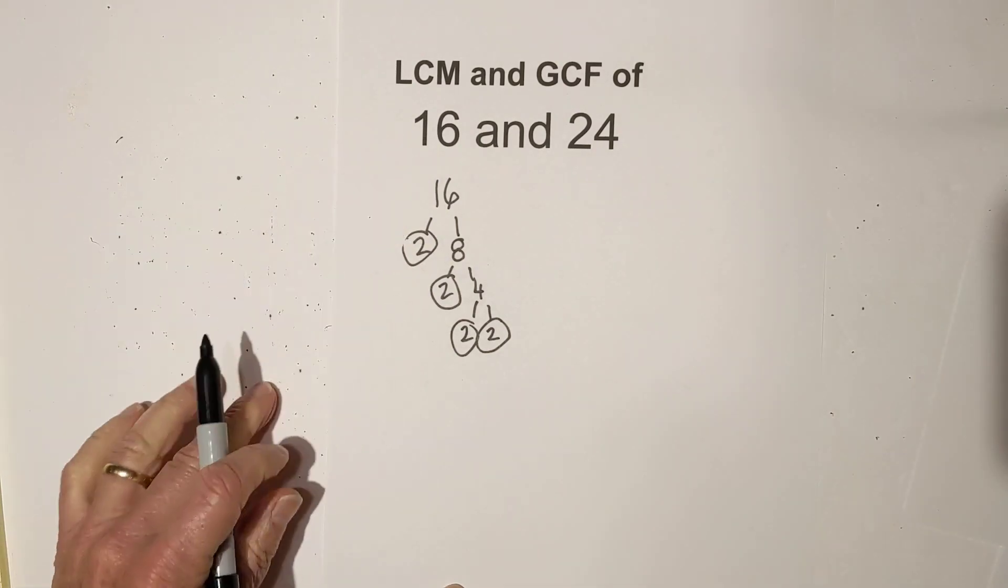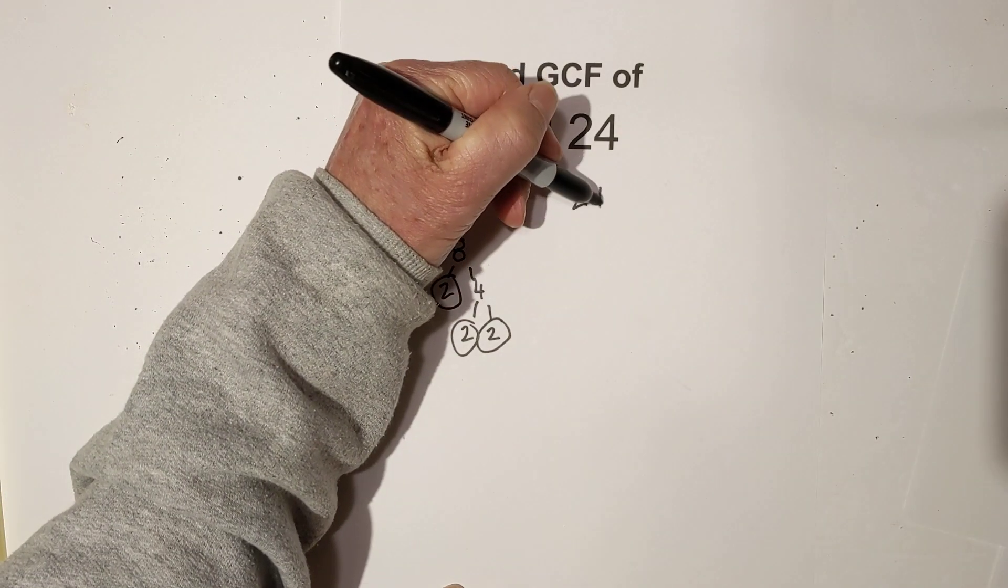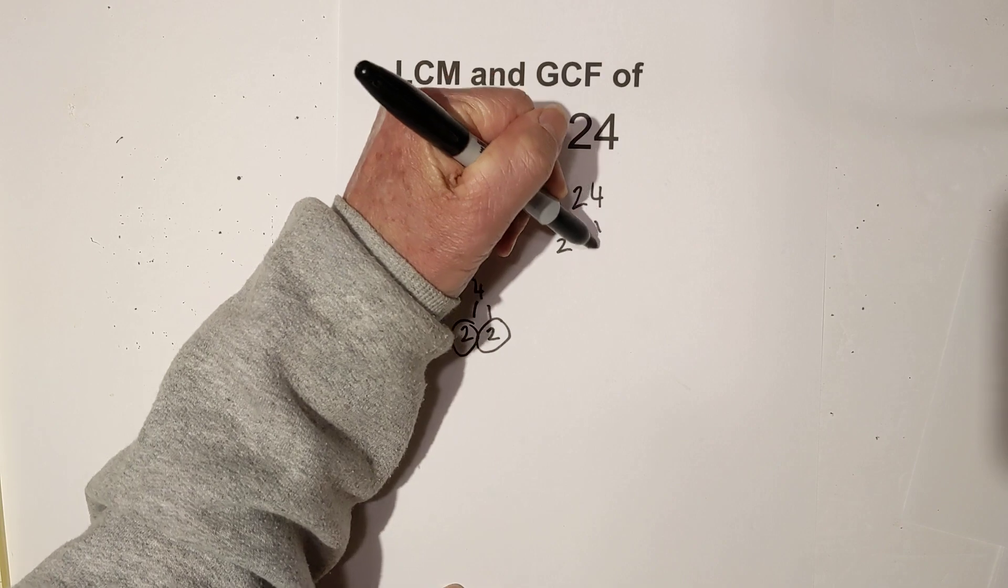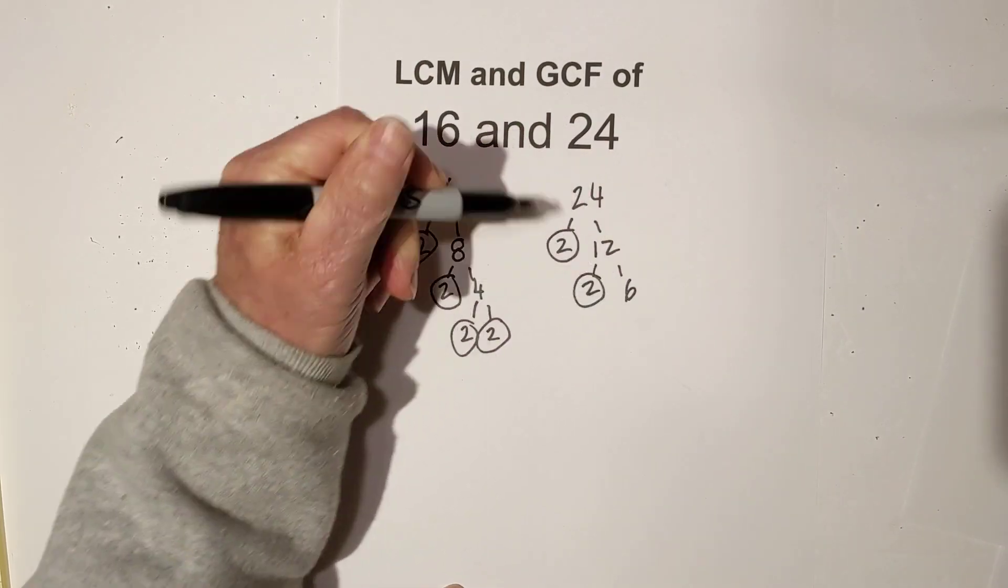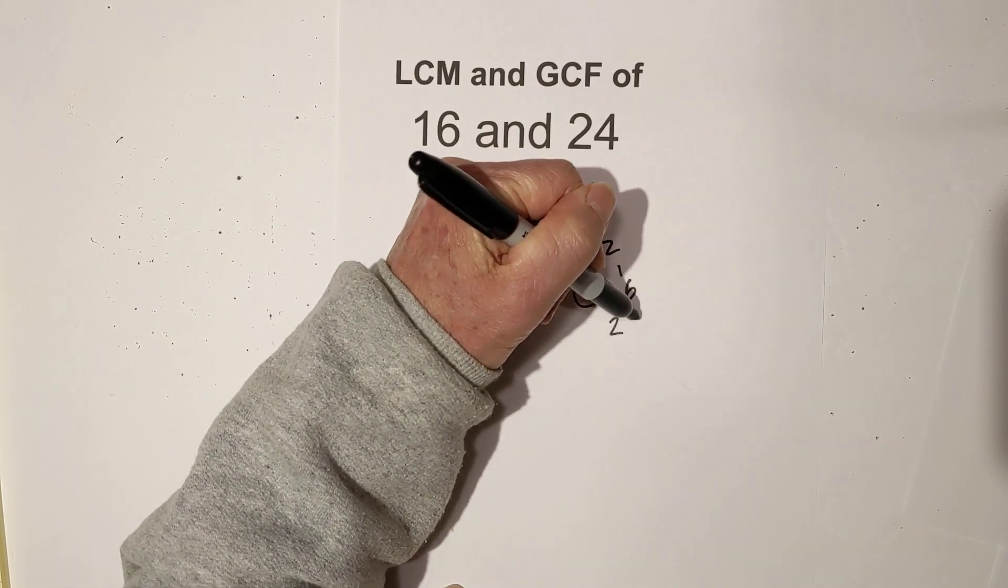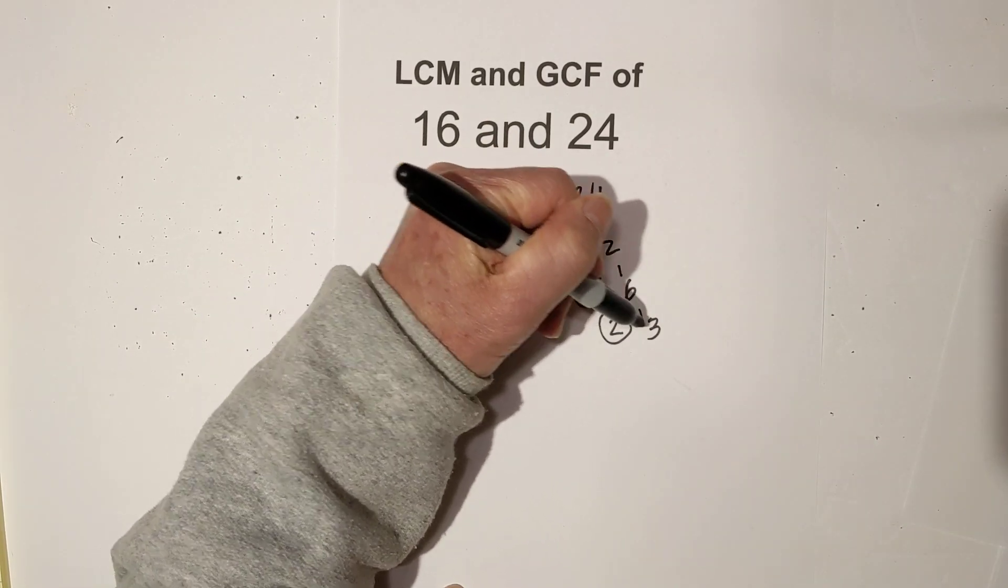Now for 24, we have 2 times 12, circle 2, it's prime, 2 times 6, circle 2, it's prime, and then 2 times 3, and they are both prime.